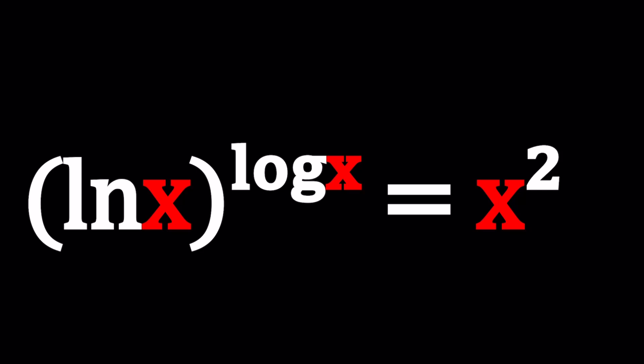All right, great. So we have ln x to the power log x equals x squared. Now we're going to solve for x values. We're also going to look at something interesting at the end, which is the graph of both of these functions.